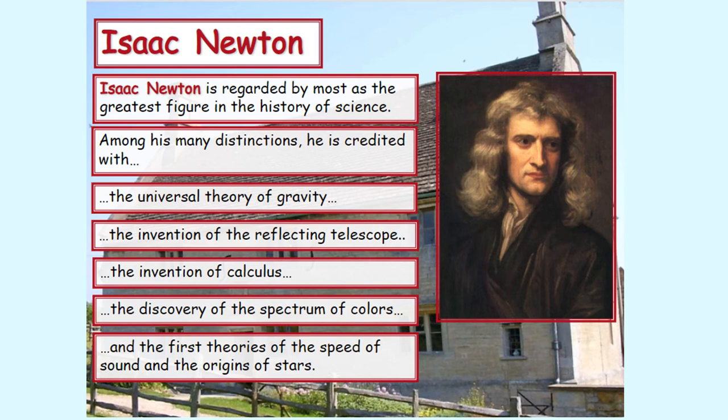Isaac Newton was an important scientist who is known as the greatest figure in the history of science because he discovered lots of things. He is important because he discovered the universal theory of gravity, and gravity, if you remember, is a non-contact force. He also invented the reflecting telescope and calculus, discovered the spectrum of colors, and developed the first theories of the speed of sound and the origins of stars.